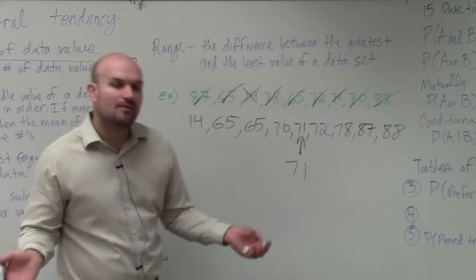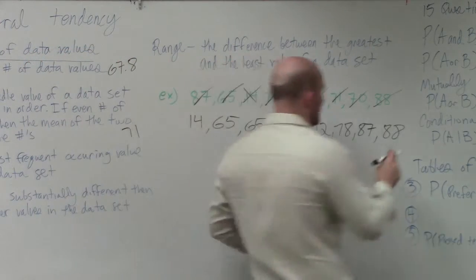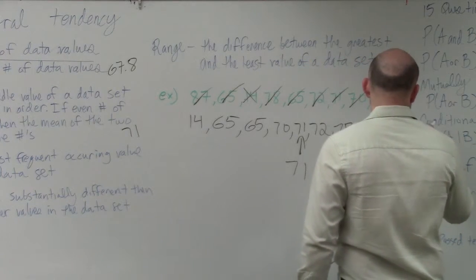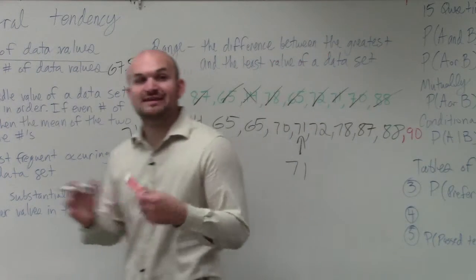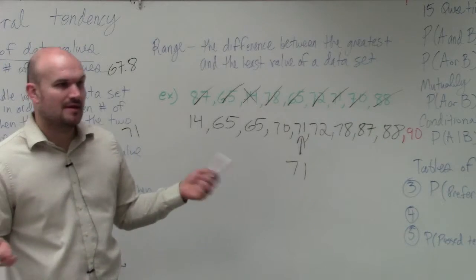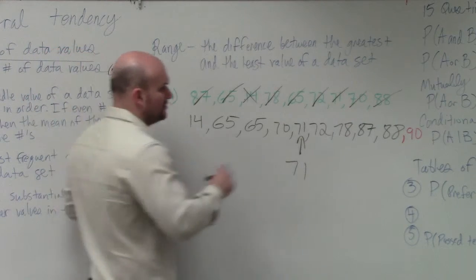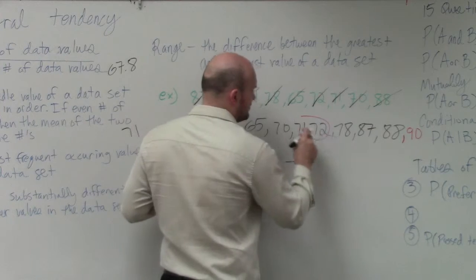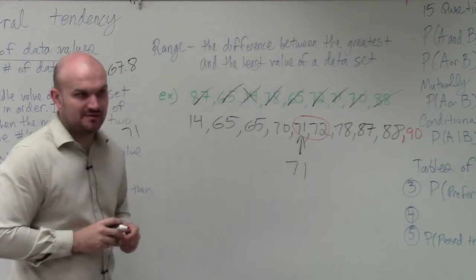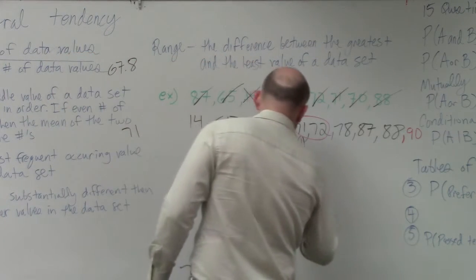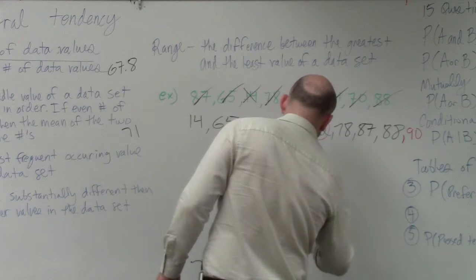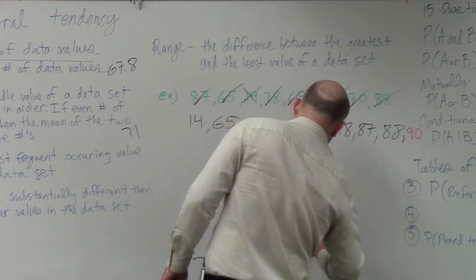The only thing I want to add - what if I added an extra number? What if you have an even set of numbers? Then to find the mode, you need to take the mean of the middle two values. So you do 71 plus 72 divided by 2, which is 71.5.